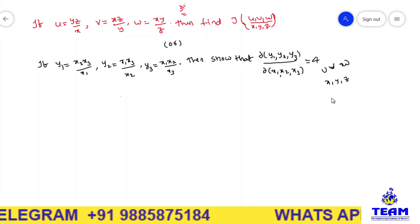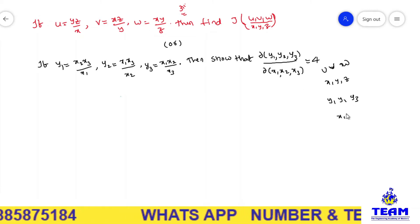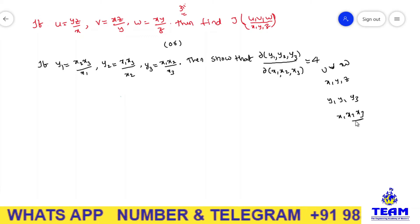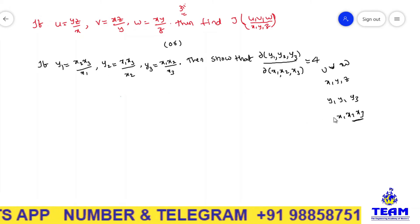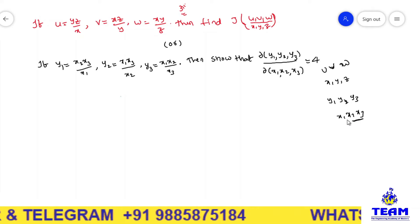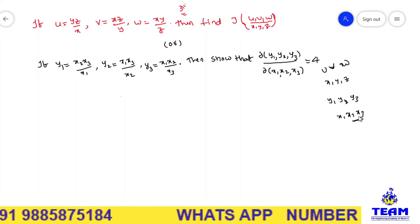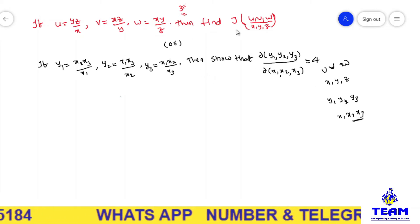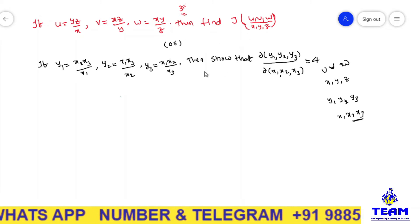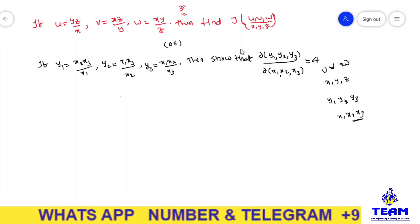For y2, x1 and x3 are in the numerator and x2 is in the denominator. For y3, x3 is in the denominator. So both are similar problems. The Jacobian can be asked as 'find the Jacobian' or 'show that this value equals 4' — both are the same. At the end, we will also discuss the inverse Jacobian.